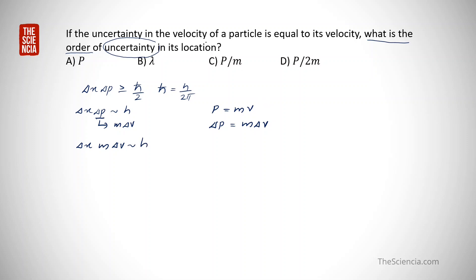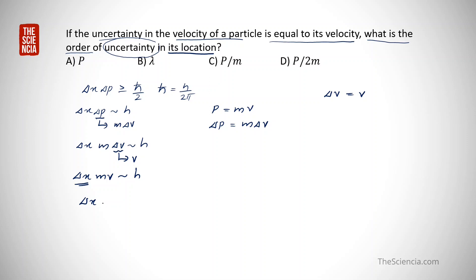Reading the question again: the uncertainty in the velocity of the particle is equal to its velocity, so delta v equals v. Substituting this, we get delta x times m times v approximately equal to h. Therefore, delta x is approximately equal to h divided by mv.